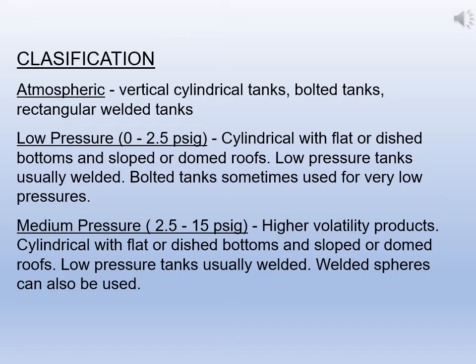Another one is medium pressure, which is 2.5 to 15 psig. These are used for higher volatility products. Cylindrical with a flat or dished bottom or sloped roof. Low pressure tanks are usually welded, and welded pressure vessels can also be used.